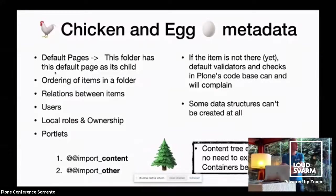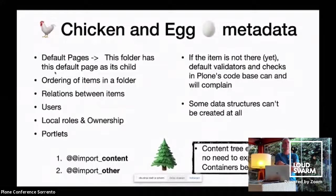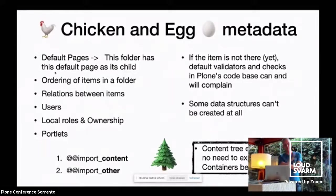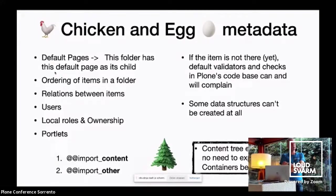Local roles, ownership, portlets — that's why we have this two-phase export import. We first import the content and then import the other metadata. There was one huge improvement done in summer by Philip, where we figured out a way to export all the content in the right order so it can also be created again in one step on import. Before, you first had to export all folder items, and when all the branches were there, then you could import the leaves. Now we have a content tree export where you can export in one go and the algorithm figures out the order.